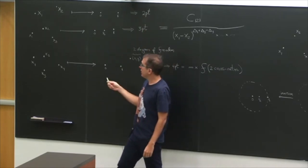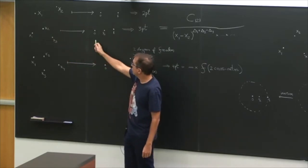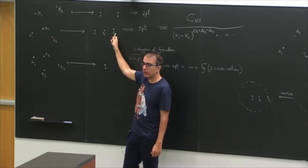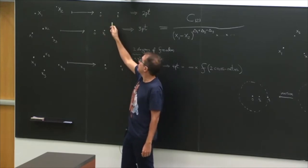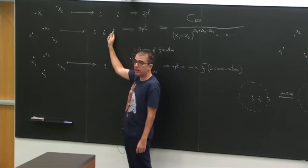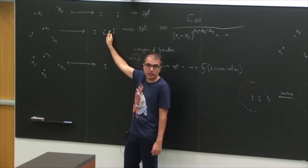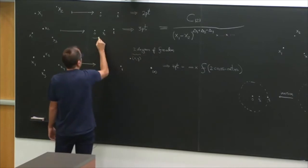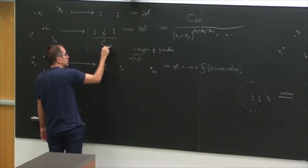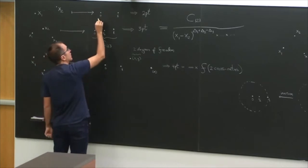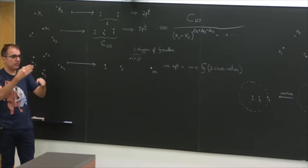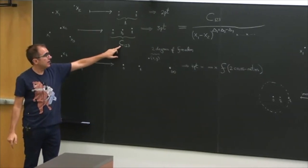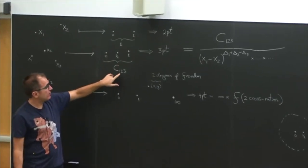Then we saw that by a conformal transformation, we can also map x1, x2, x3 — three points — to some fixed locations, for example zero, one-half, one, or zero, one, infinity. And therefore, if I call this a number — but now it's a new number — if I fix the two-point function normalization to one, then this is physical. We normalize the two-point function, so now the three-point function is physical.